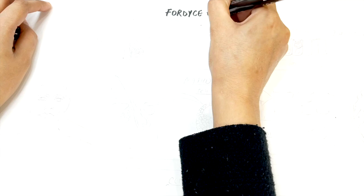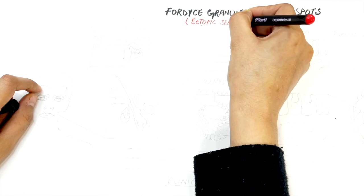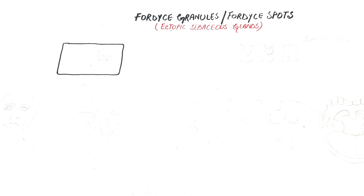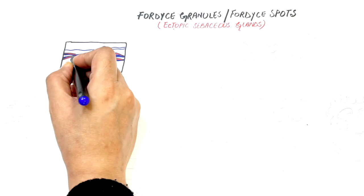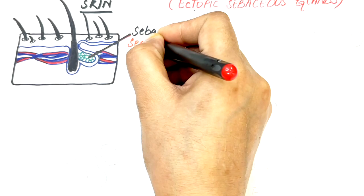Fordyce granules, also called Fordyce spots, are ectopic sebaceous glands. These are collections of normal sebaceous glands within the oral cavity. Sebaceous glands are part of the pilosebaceous unit, which means they are normally found wherever hair follicles are located, such as skin.